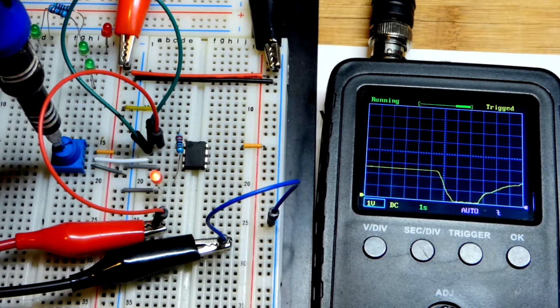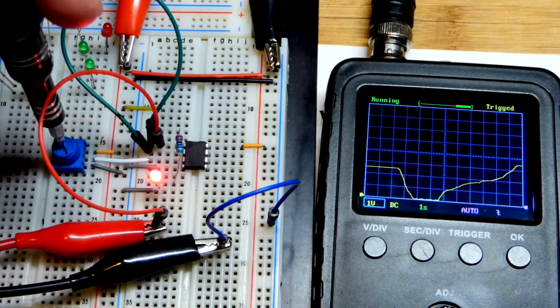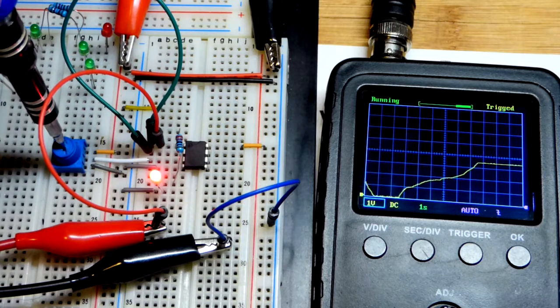Now you'll see when we get about one and a half volts, the LED lights up. So it's outputting the voltage that the LED needs.